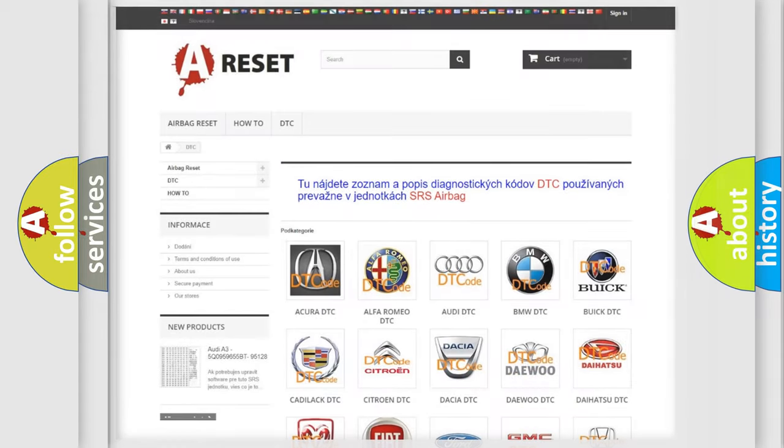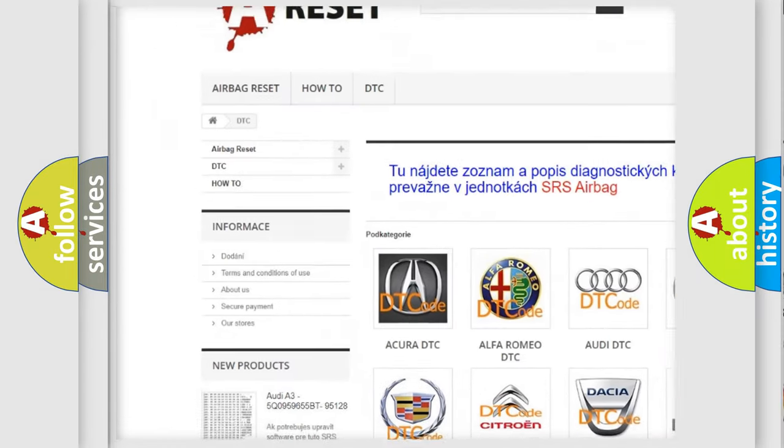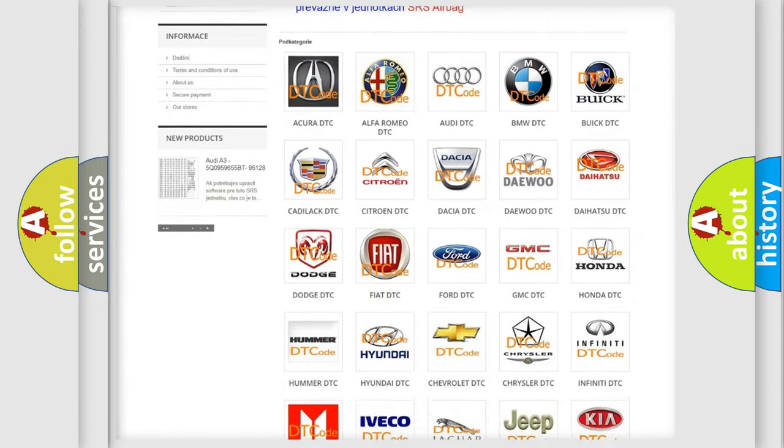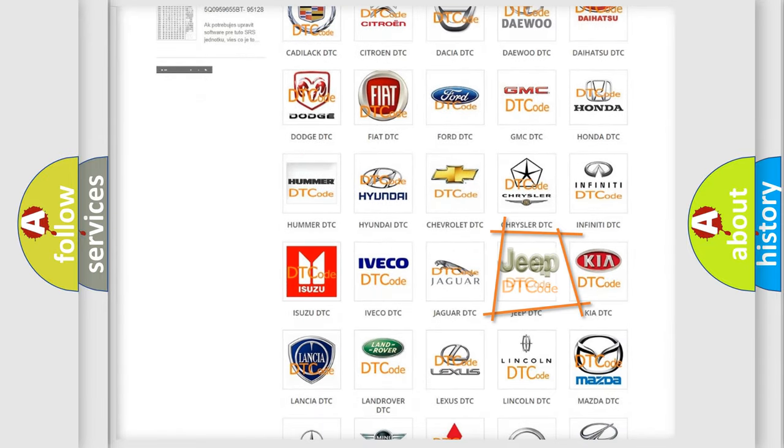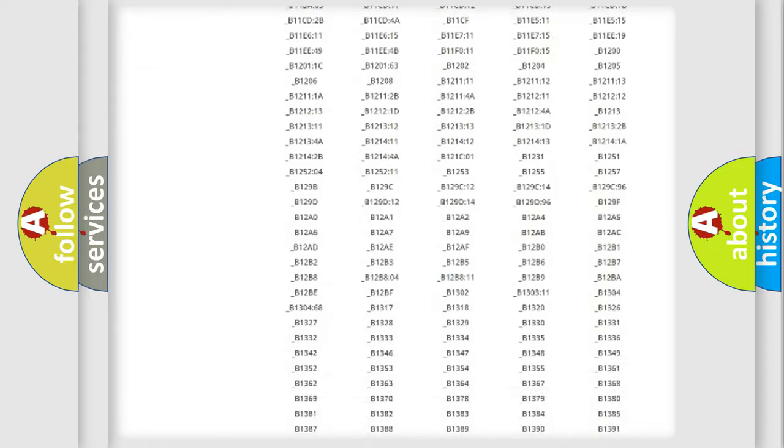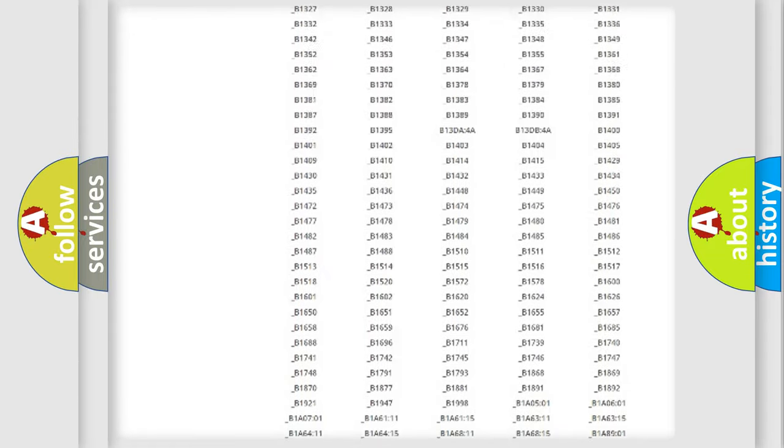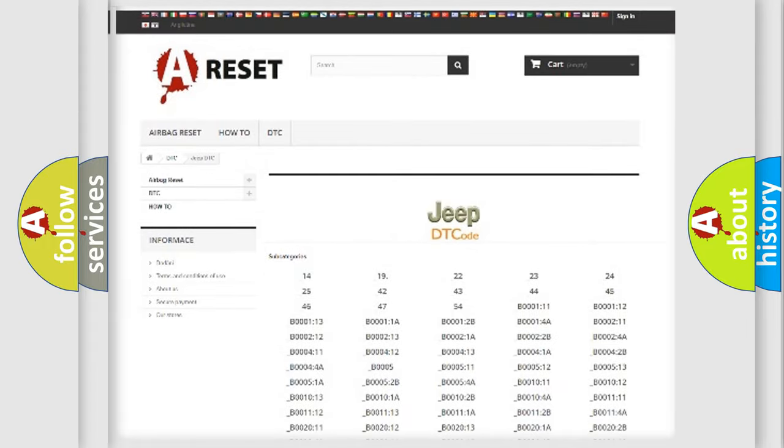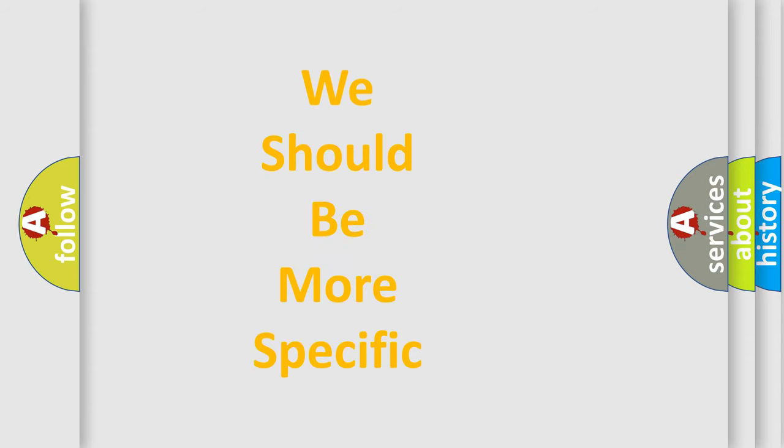Our website airbagreset.sk produces useful videos for you. You do not have to go through the OBD2 protocol anymore to know how to troubleshoot any car breakdown. You will find all the diagnostic codes that can be diagnosed in Jeep vehicles, and many other useful things. The following demonstration will help you look into the world of software for car control units.